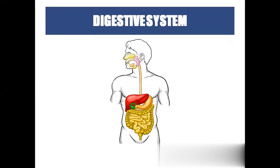The digestive system converts complex food particles into simple food particles that can be absorbed into the blood. The overall process of digestion consists of grinding food in two ways: mechanical digestion, which happens in the mouth through chewing, and chemical digestion, which occurs with the help of enzymes.